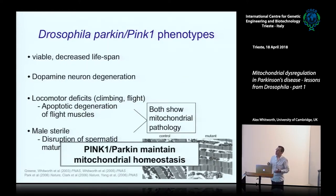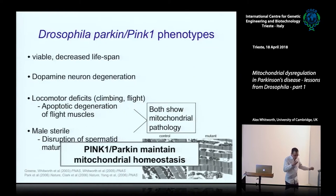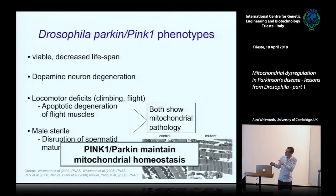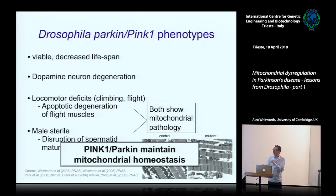Parkin and PINK1 mutant males are completely sterile - totally unexpected and I don't think really has anything to do with the disease. But these major phenotypes were pointing the way to defining that a major function of PINK1 and Parkin was maintaining mitochondrial homeostasis. Back in the day, this was fairly revolutionary stuff - people were generally thinking about protein aggregation as the sole point about the disease, and the fly models were pointing us in a different direction to follow up how mitochondria are maintained and stay healthy.